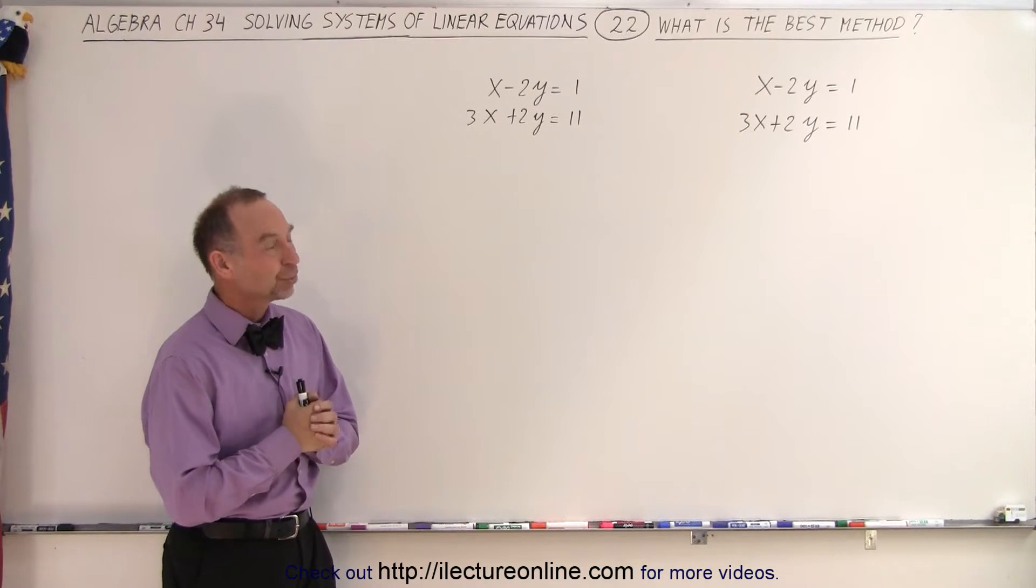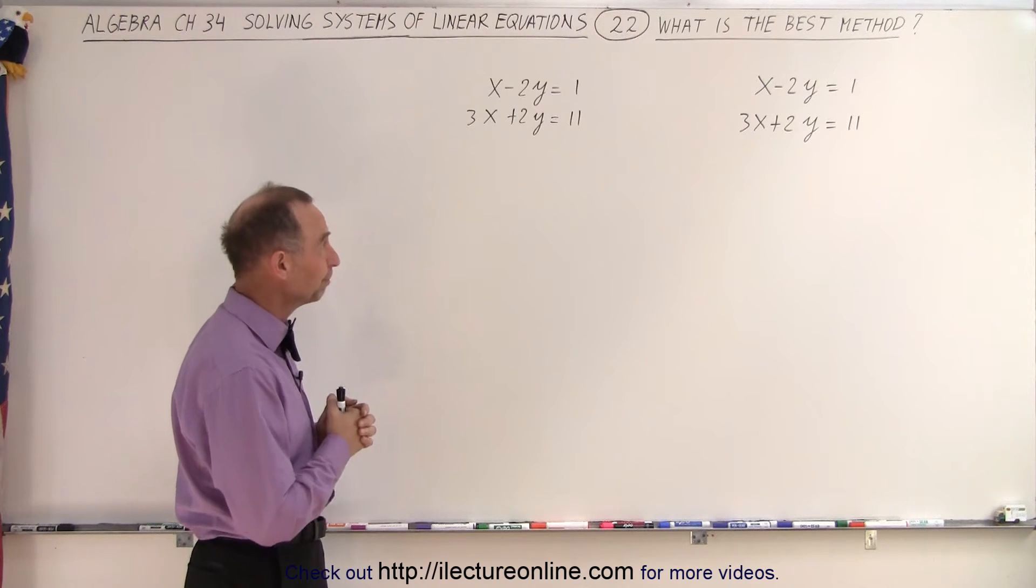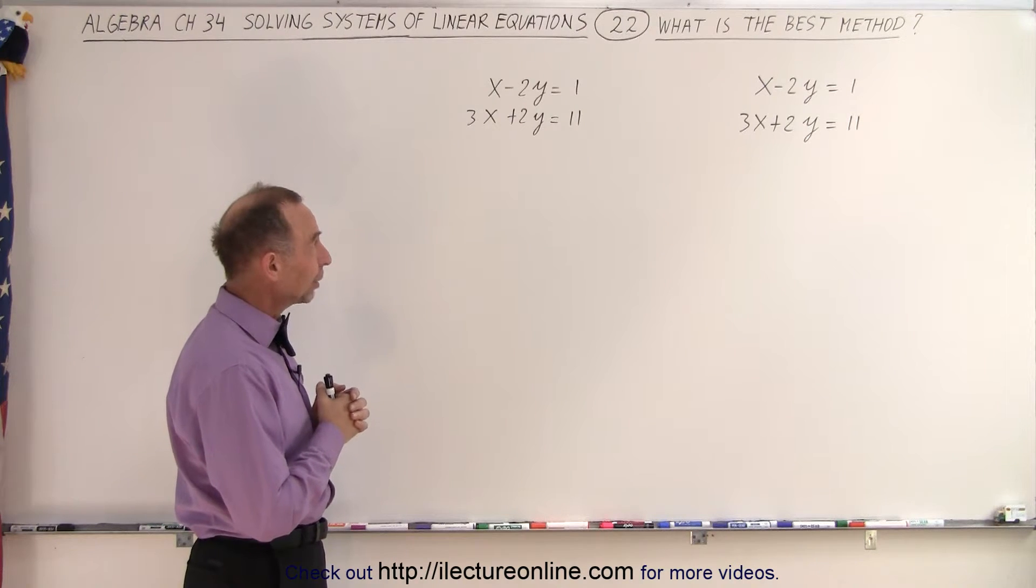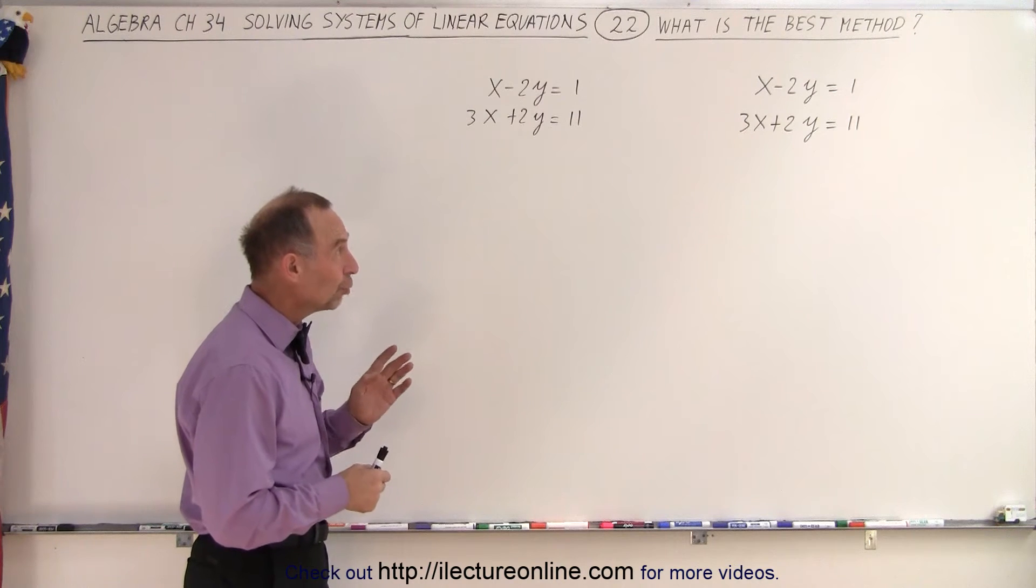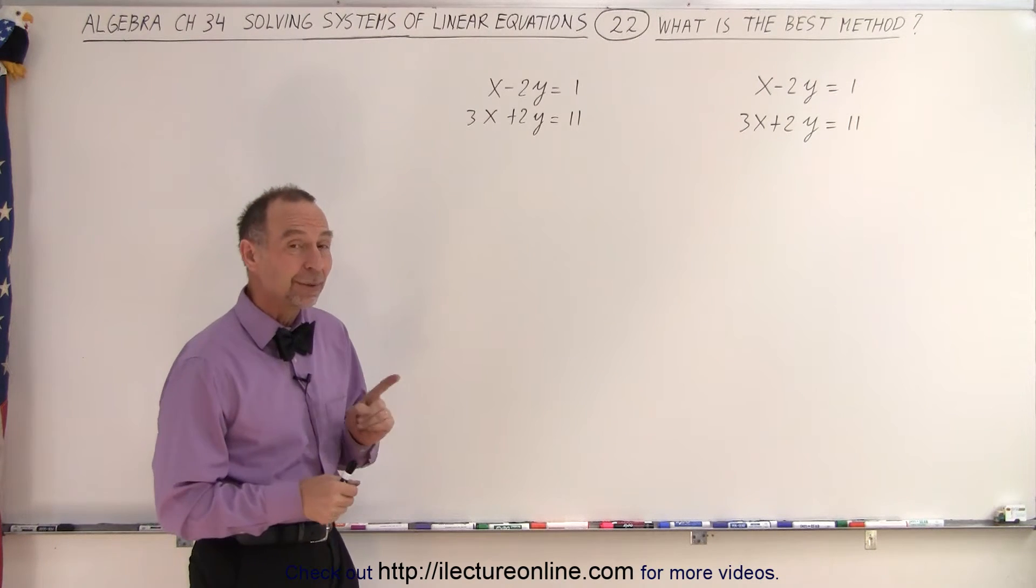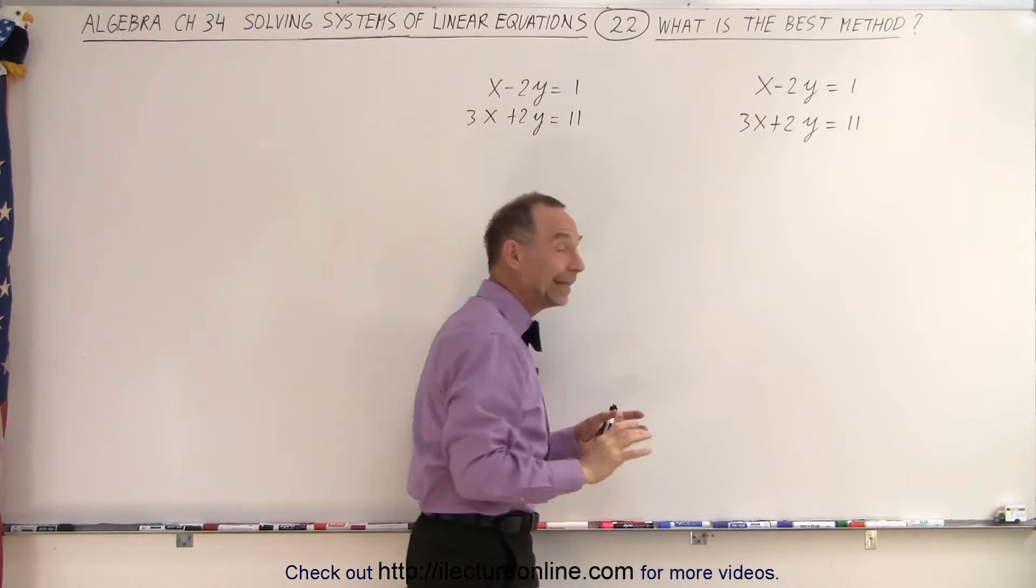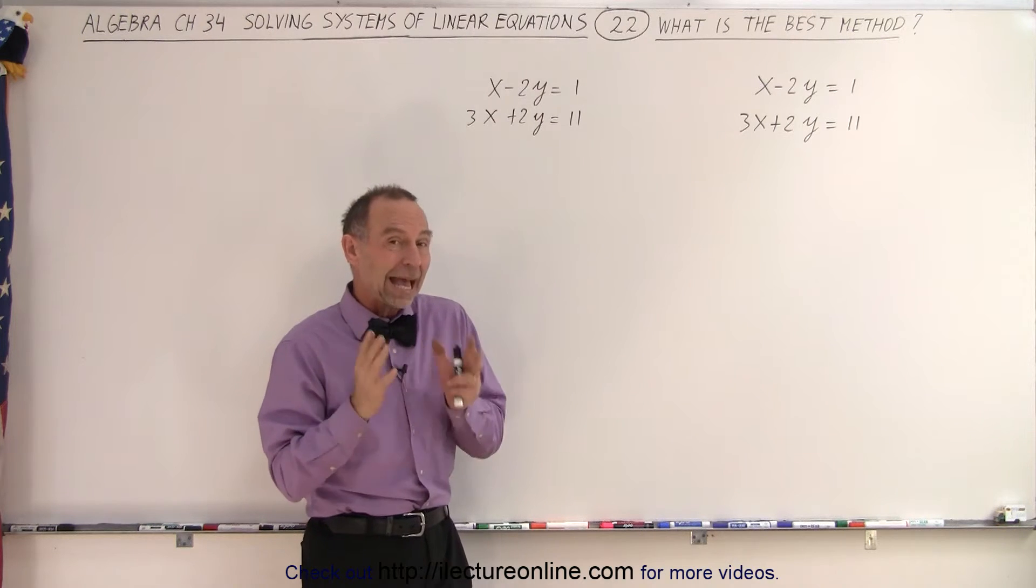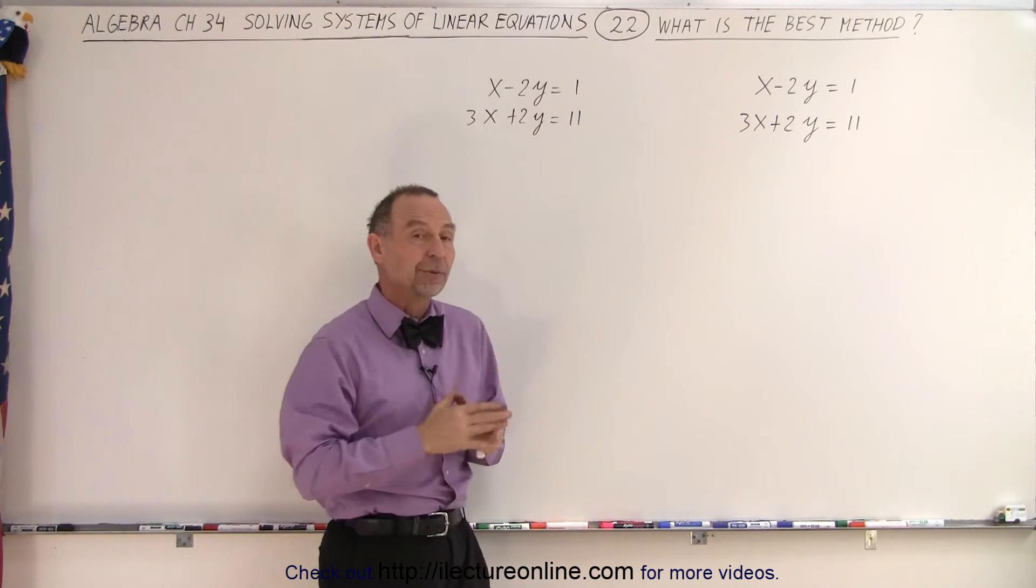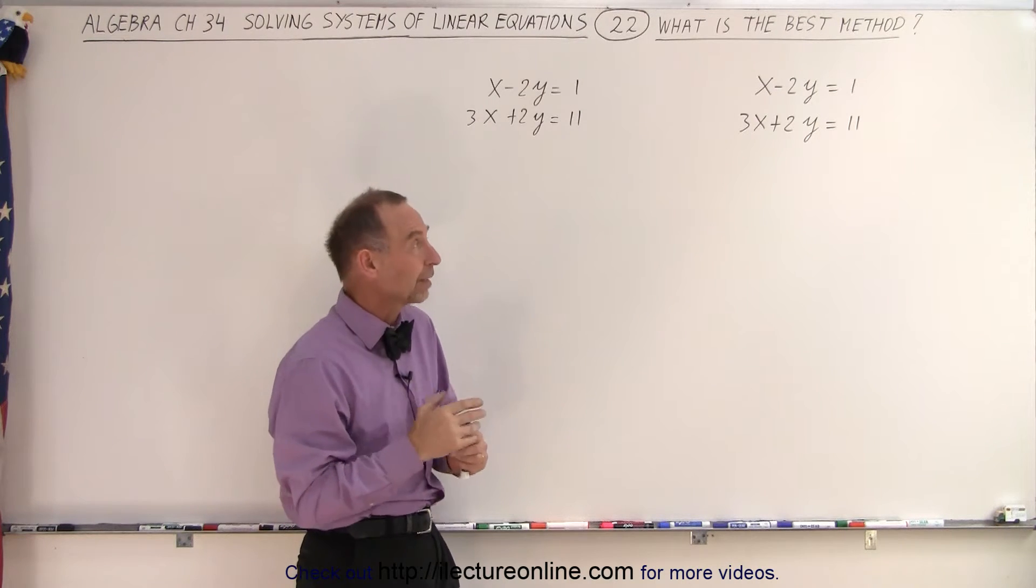Welcome to our lecture online. So which method should we use to solve this problem? When I take a look at it, remember, the goal was to find a numerical coefficient for the same variable that was the same. And in this case, we have a negative 2y and a positive 2y. And then we want to change the sign so that one is positive, one is negative. So when we add the two equations, that variable is eliminated. So it seems like the obvious choice would be the method of elimination.